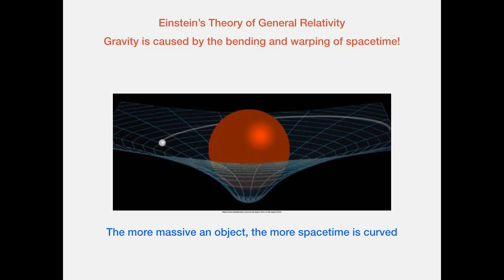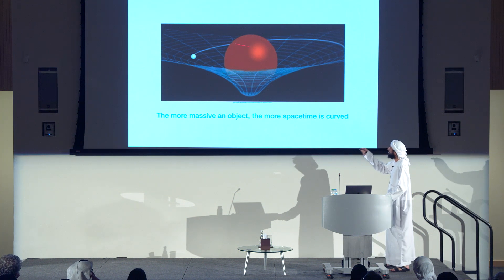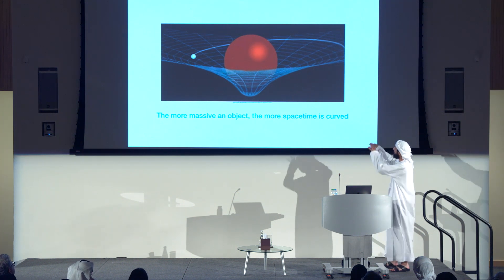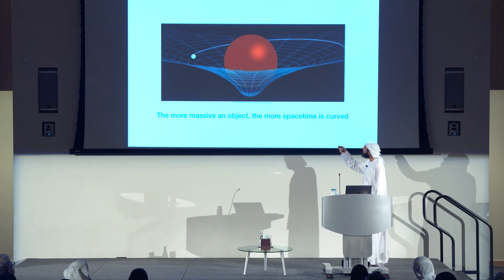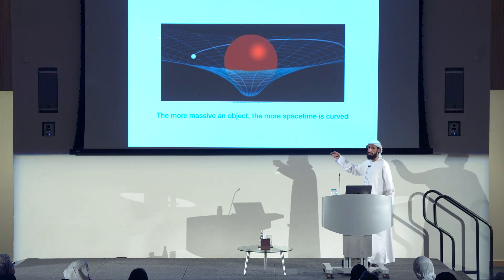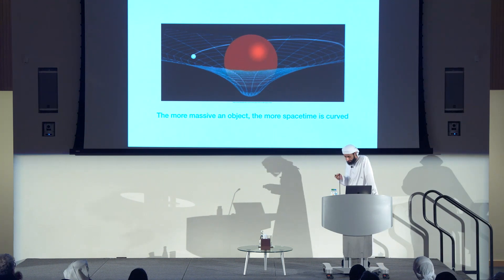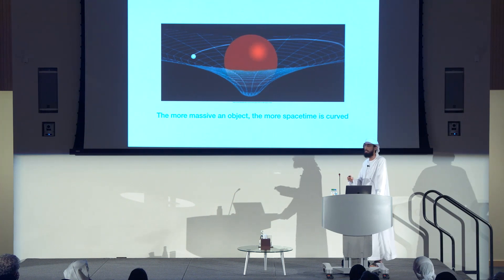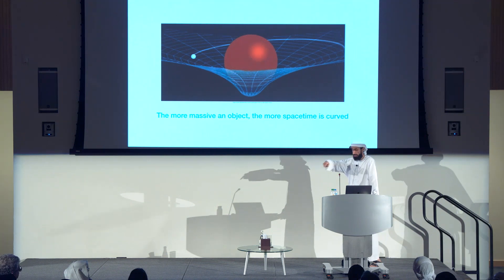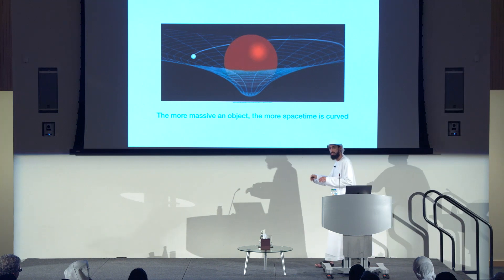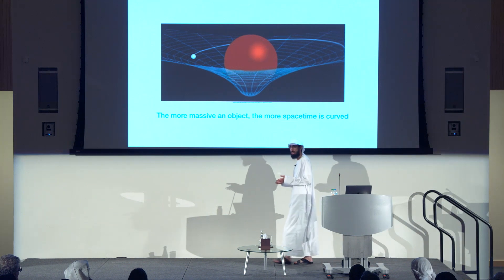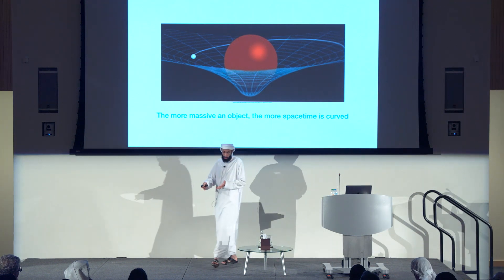This is Einstein's theory of general relativity: a statement that gravity is caused by the bending and warping of space time. The more massive an object — take the sun, for example — the more warped space time is. This mesh is a cartoon for the strength of gravity. A small planet orbiting a larger star goes in a circle because of the shape of how space time is deformed — it's trying to go in a straight line but is forced to go around the sun.